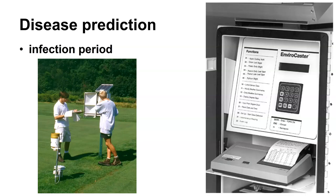One of the things we look at is the infection period. This device is called an envirocaster — it monitors rainfall, humidity, and temperatures. Based on those readings and the type of disease you're looking at, it will tell you whether conditions are good for infection. If conditions haven't been good, there's no reason to go out and try to control anything. If conditions are good for infection, now it's time to implement a process that will modify that infection.